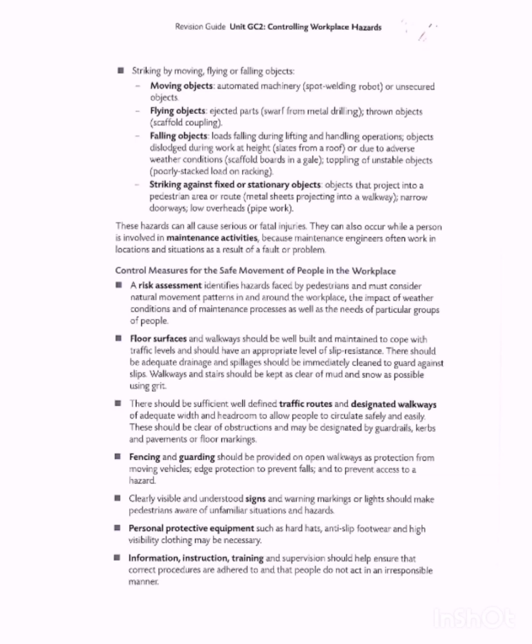Clear, visible, and understood signs, warnings, markings, or lights should make pedestrians aware of unfamiliar situations and hazards. Signs and symbols should be present in every workplace or facility to provide direction. These signs represent things like 'the floor is wet' or 'this is where people should walk.' Because they are visible, even people who don't speak the language or who are deaf can understand the signs and symbols that guide the movement of people.